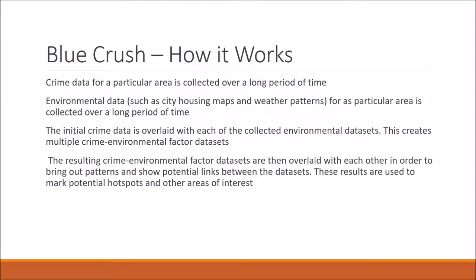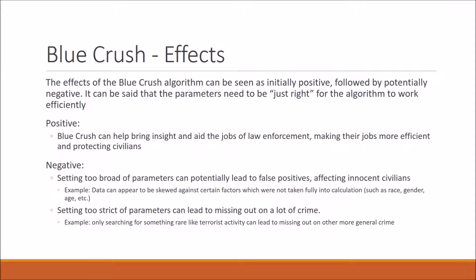How does it work? Crime data and environmental data are collected over a long period of time. That data is fed into the algorithm, and the resulting data sets are then overlaid to bring out patterns and other potential links between each set.